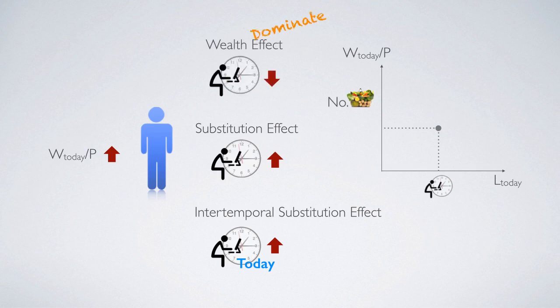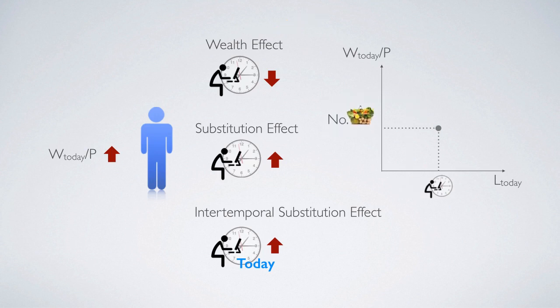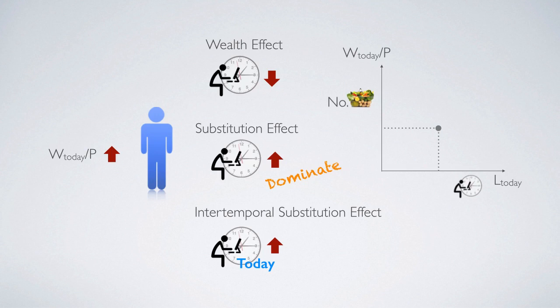The first scenario is that the wealth effect dominates. If the wealth effect is very strong, then when the wage rate increases, the household feels extremely happy from the wealth increase and chooses to decrease his labor supply. Therefore, we would get a labor supply curve with a negative slope. On the other hand, if the substitution effect plus the intertemporal substitution effect together dominate, then the household's working decision would be to increase his labor supply. Therefore, we would see a labor supply curve with a positive slope.